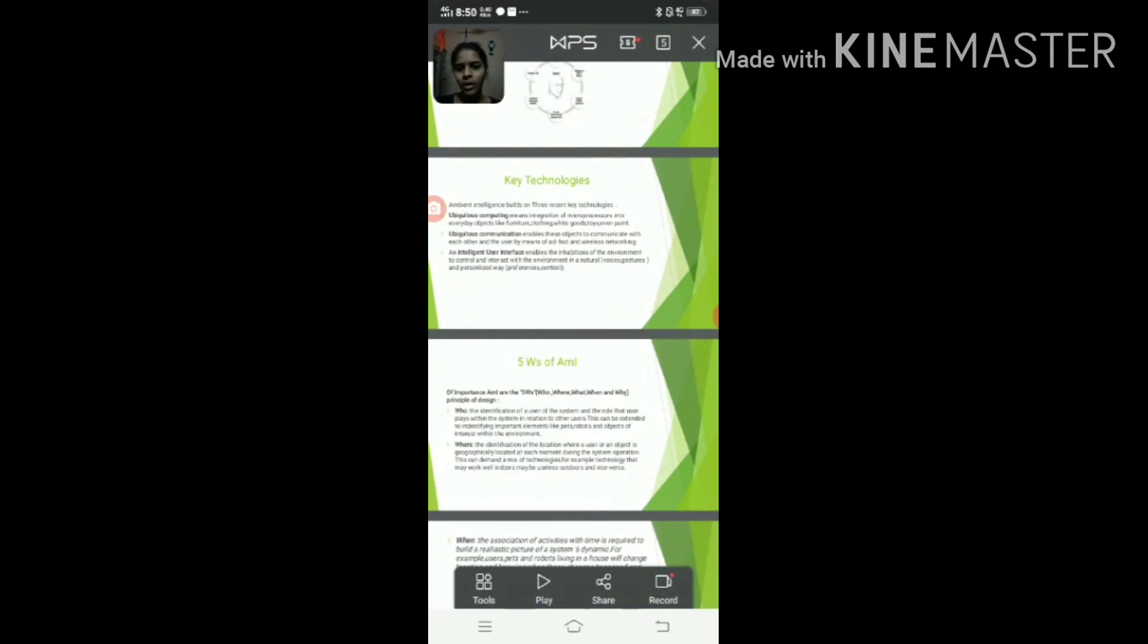In key technologies, Ambient Intelligence builds on three recent key technologies. Ambient Computing means integration of microprocessors into everyday objects like furniture, clothing, white goods, toys, even pens, etc.